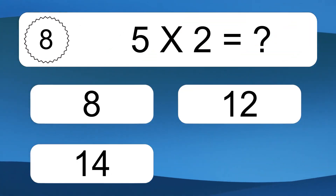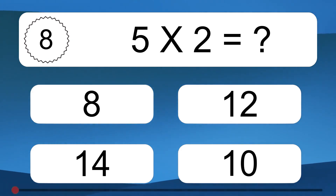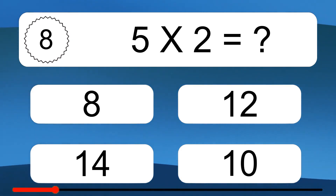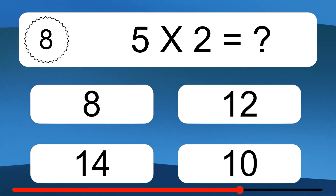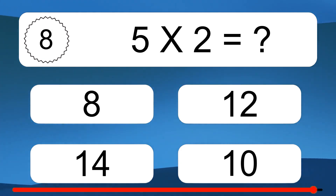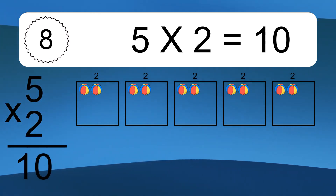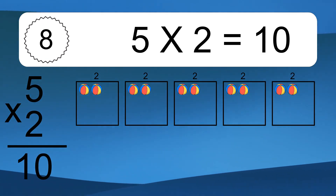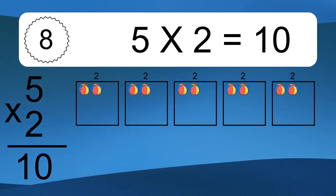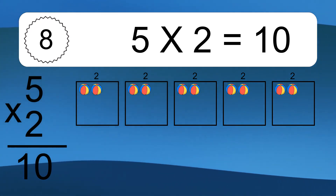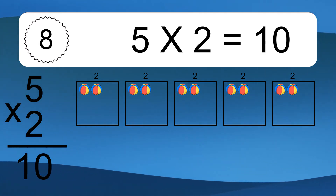5 times 2 equals what? We have boxes and each box has 2 colorful balls inside. If you count all the balls in all the boxes together, you will have 5 times 2 balls. This equals 10 balls.